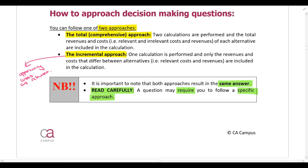With the total approach, we perform two calculations, taking all costs and all revenues into account — total revenues and total costs. This includes relevant and irrelevant information. We do one calculation for each alternative and take the total cost of each into account. With the incremental approach, we perform one calculation and only take into account relevant costs and relevant revenues.